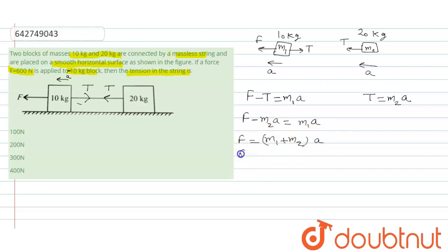F is 600 equal to 10 plus 20 into A. So this implies A equal to 20 meter per second square.